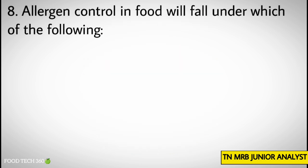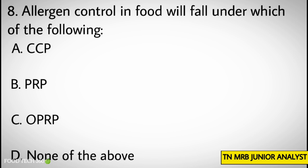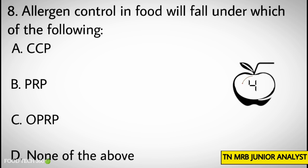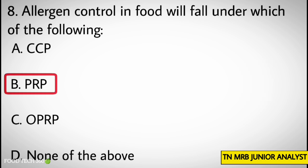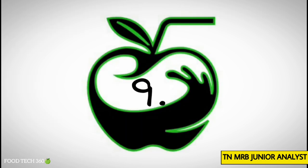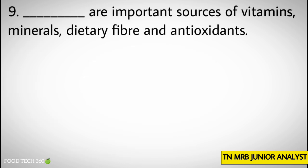Allergen control in food will fall under which of the following? Options: A. CCP, B. PRP, C. OPRP, D. None of the above. Correct answer: B. PRP.